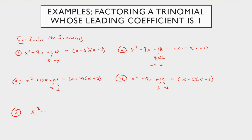Let's look at x squared minus 8x minus 9. They need to sum to a negative and multiply to a negative, so one has to be positive and one negative. Negative 9 and positive 1: negative 9 times positive 1 equals negative 9, and negative 9 plus 1 equals negative 8. So this factors into x minus 9 times x plus 1. That's why I call it a number game — you're just trying to find the two numbers.